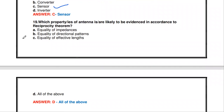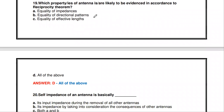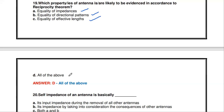The next question: which properties of an antenna are evidenced according to the reciprocity theorem — equality of impedances, equality of directional pattern, equality of effective length, or all of the above? All of the above is the answer. Equality of impedance, equality of directional pattern, and equality of effective length are all properties of the antenna according to the reciprocity theorem.